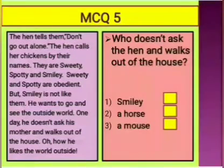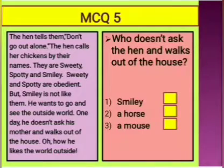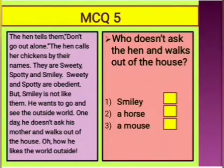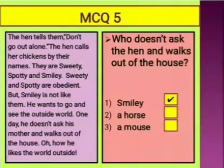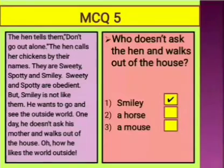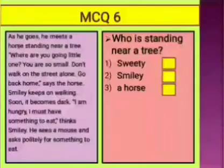The next question is: who doesn't ask the hen and walks out of the house — which chicken has gone out without asking his mother? Is it Smiley, a horse, or a mouse? The answer is Smiley. Smiley has gone out of the house without asking his mother, so you will put a tick in front of Smiley. That's how you solve this MCQ question.